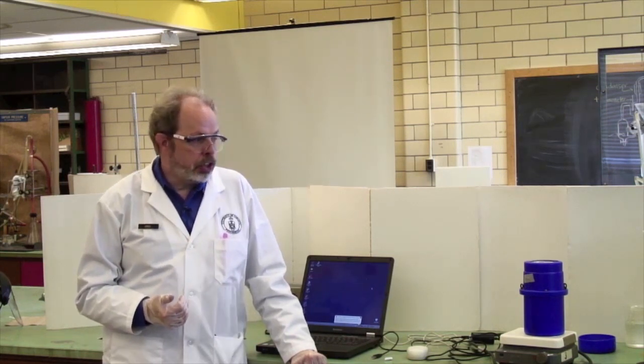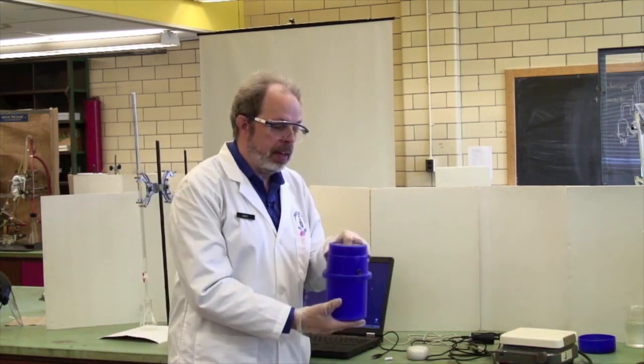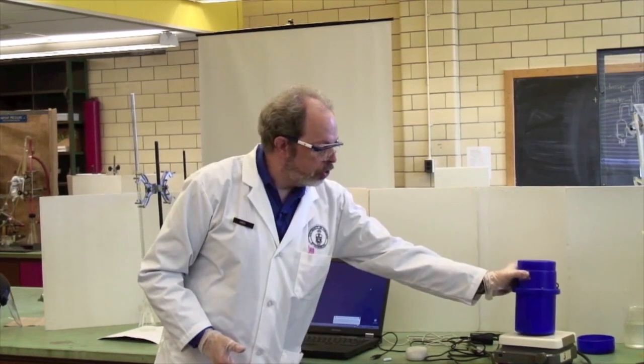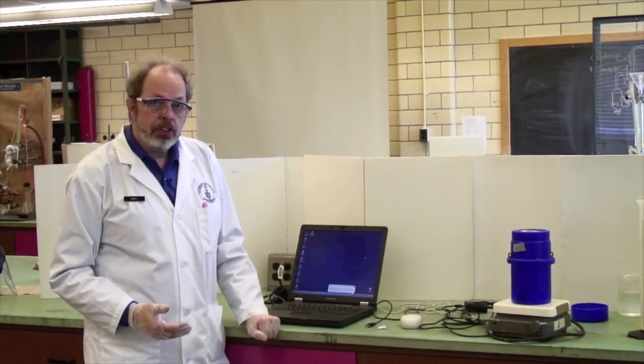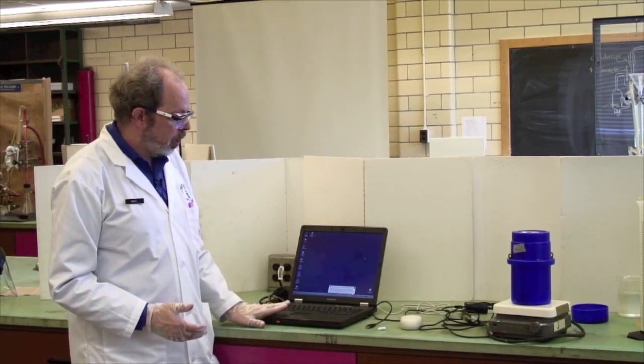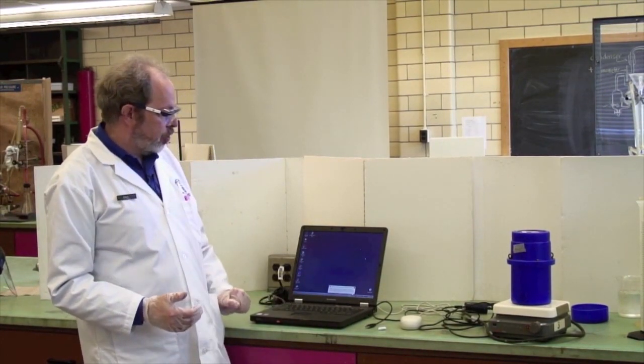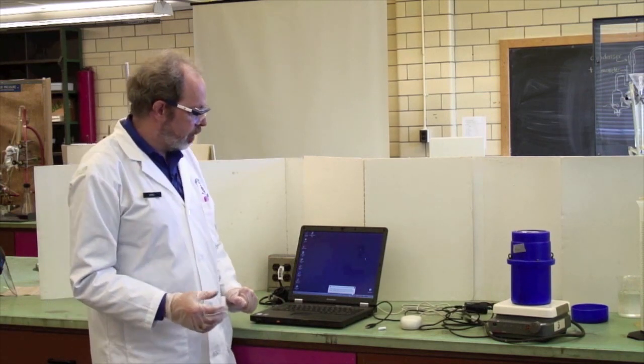The calorimeter is a Dewar flask or thermos flask. It sits here and it should sit on top of a stirrer plate. You are monitoring the temperature using a laptop. These are somewhat ancient.